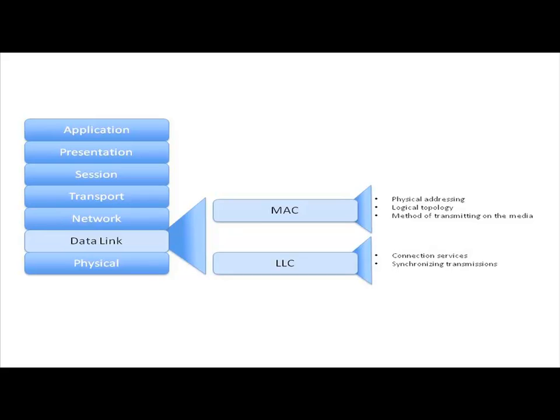What about the LLC sublayer? One of the things LLC is concerned with is connection services. Connection services deals with flow control. If the sender is sending too rapidly, a flow control mechanism can ask it to slow down. Error control, that's part of connection services. And error control is a way to let the sender know that the expected data was not received.